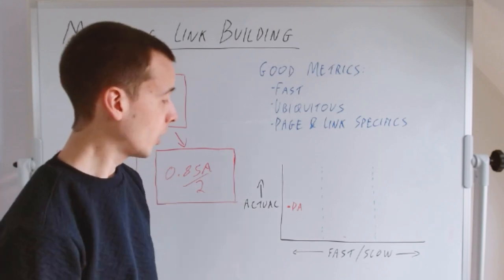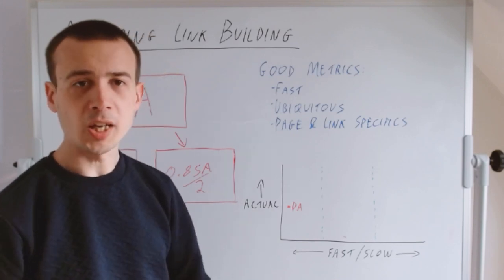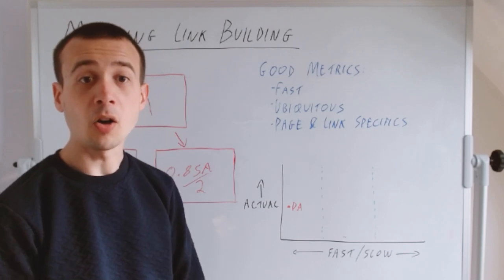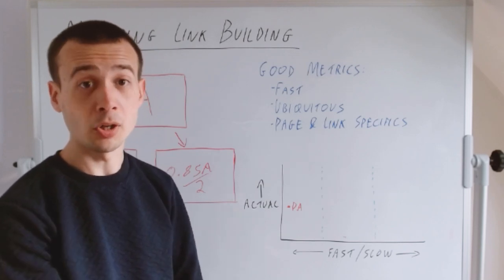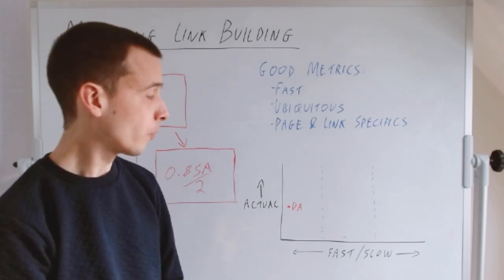It's very fast and very ubiquitous, but it's missing some of this nuance because it's a domain level metric. It's answering a slightly different question—the question DA is designed to answer: how likely is a page on this domain, all things being equal, to rank well? That's a slightly different question to how valuable is the link.